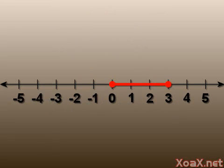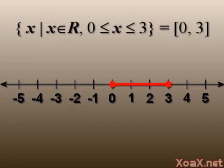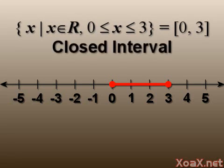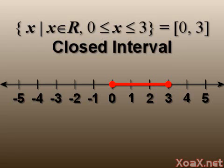For example, the graph of the set of real numbers between zero and three looks like this. The set notation is read as the set of all x such that x is a real number and x is greater than or equal to zero and less than or equal to three. Since intervals are a very common type of set, there is a shorthand notation for this interval. More specifically, this is called a closed interval because it includes the endpoints. When we include an endpoint we use square brackets in the interval notation, and filled in dots on the graph to indicate that the endpoint is included.